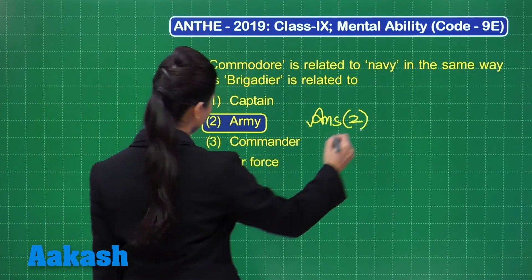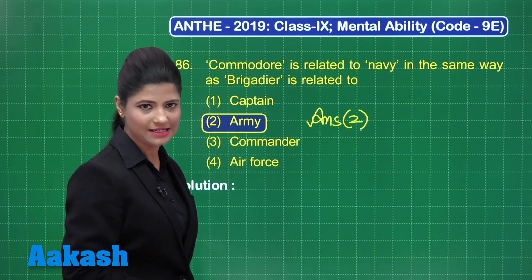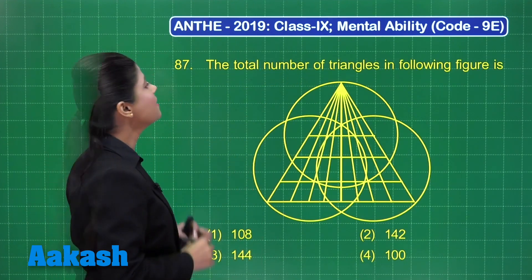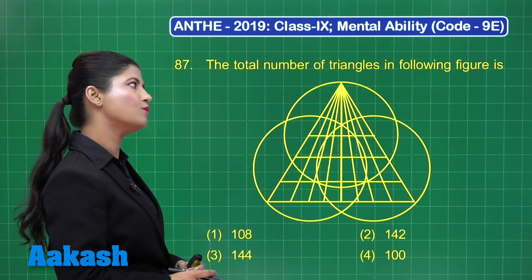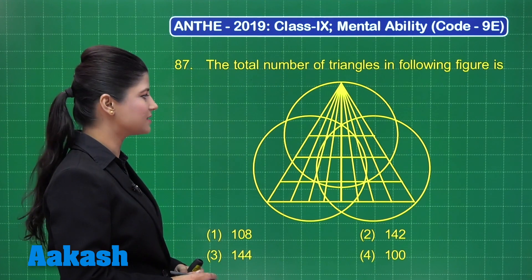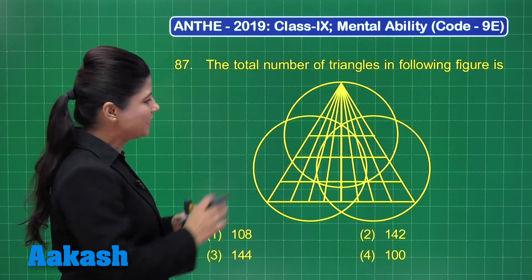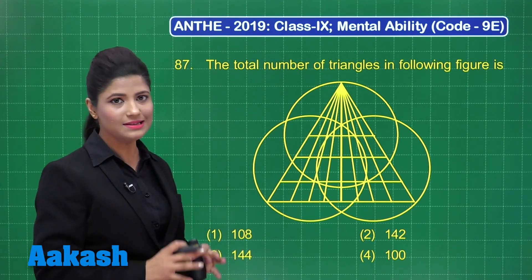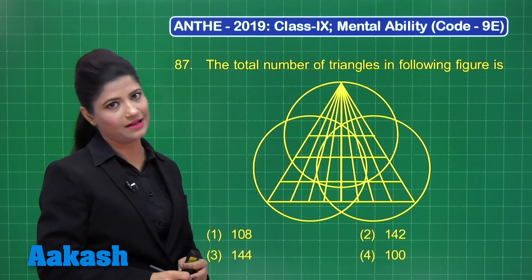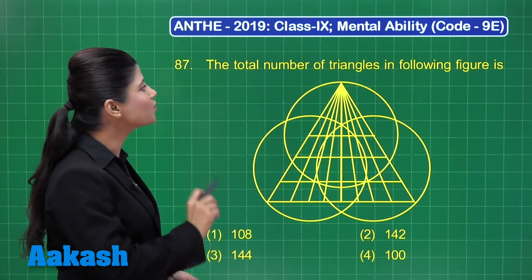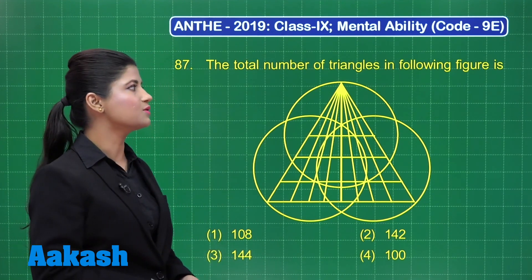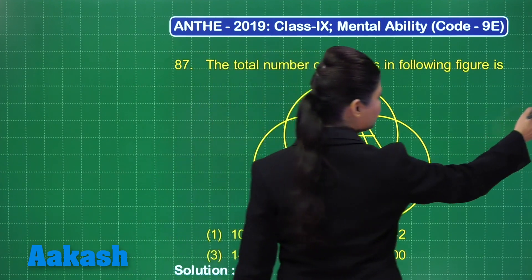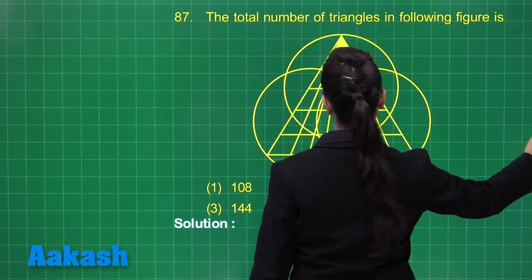I hope it is clear. Let's take up question number 87. It states the total number of triangles in the following figure is. You can find here an interesting figure including some circles and lots of triangles. You need to count the total number of triangles to find the answer to this question. Let's observe this figure closely.